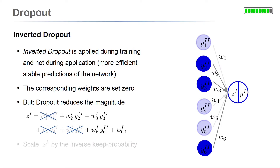Setting these weights to zero reduces the number of terms aggregated by the summation function z superscript 1. Three of the six terms of the linear combination with the weights are zero when dropout is used. But at test time, when the neural network is applied to data, all terms are taken into account, and the magnitude is much larger compared to when the network was trained. To compensate this, the summation z superscript 1 is scaled in the training by the inverse of the keep probability — for example, by a factor of 2 to compensate the 50% dropped-out neurons.